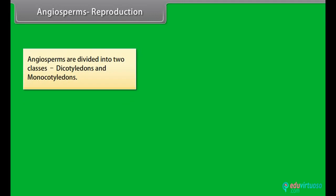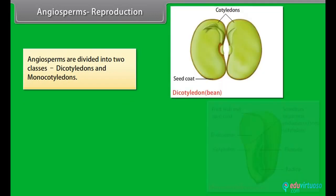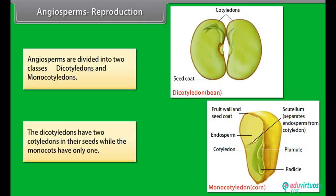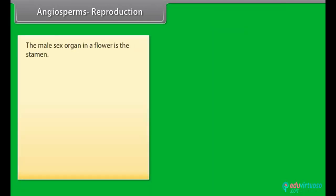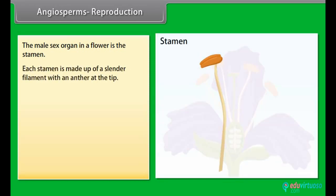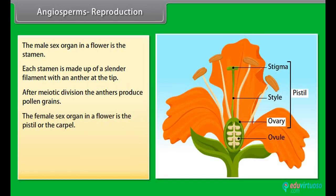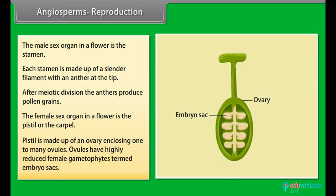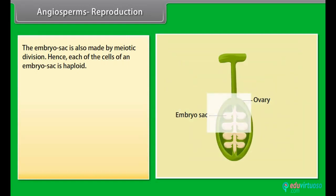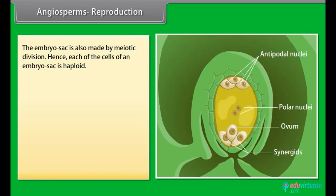Angiosperms are divided into two classes based on cotyledons: dicotyledons and monocotyledons. The dicotyledons have two cotyledons in their seeds while the monocots have only one. The male sex organ in a flower is the stamen. Each stamen is made up of a slender filament with an anther at the tip. After meiotic division, the anthers produce pollen grains. The female sex organ in a flower is the pistil or the carpel. The pistil is made up of an ovary enclosing one to many ovules. Ovules have highly reduced female gametophytes termed embryo sacs. The embryo sac is also formed by meiotic division, so each of the cells of an embryo sac is haploid.